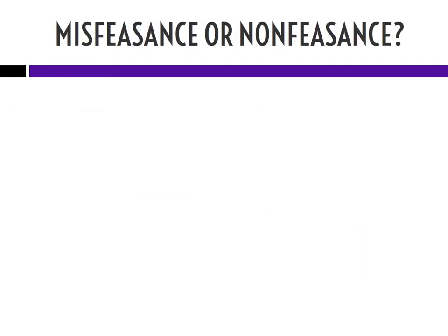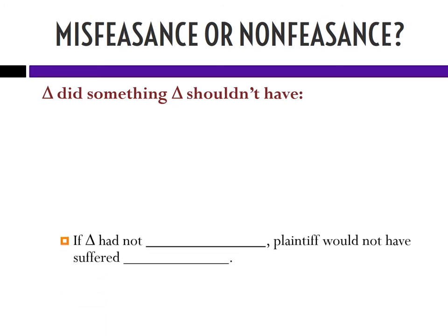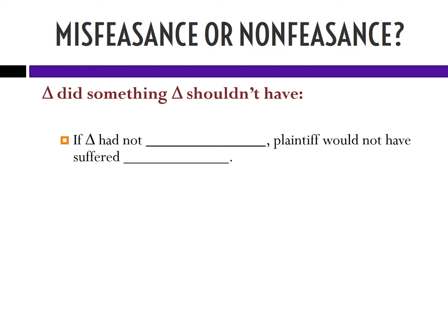We've talked about misfeasance and nonfeasance. Misfeasance is when you take an action and you do so without using reasonable care. Nonfeasance is when you fail to take an action and there was some duty for you to take that action. If the defendant took an action without using reasonable care, we can test but-for causation by saying: if the defendant had not done the negligent act, plaintiff would not have suffered harm. For example, if the defendant had not driven drunk, plaintiff would not have suffered being run over.